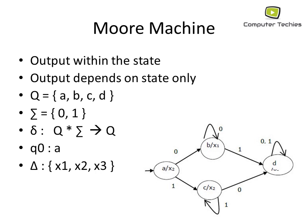Q0 is the initial state A. Δ is the set of output symbols {X1, X2, X3}. λ is the output function that maps Q → Δ, meaning every state gives us an output. Being on state B gives output X1; on state A gives output X2, and so on. This is the Moore machine — if you see output embedded within states in a finite automata, it is the Moore machine.